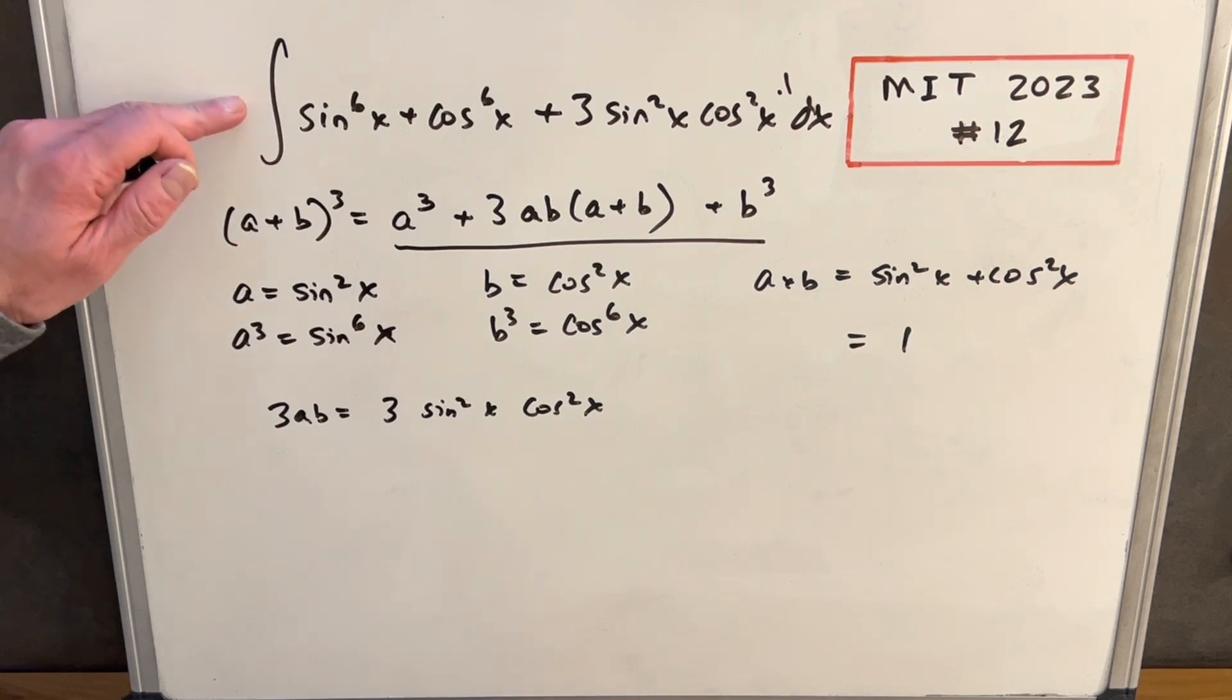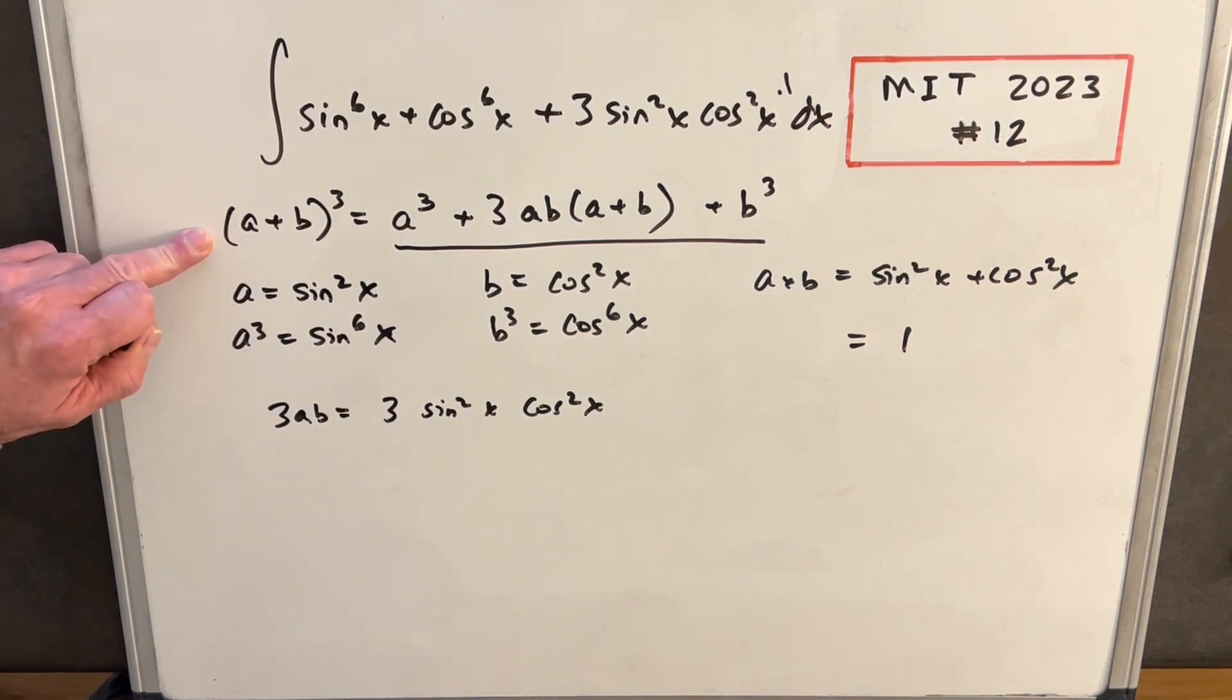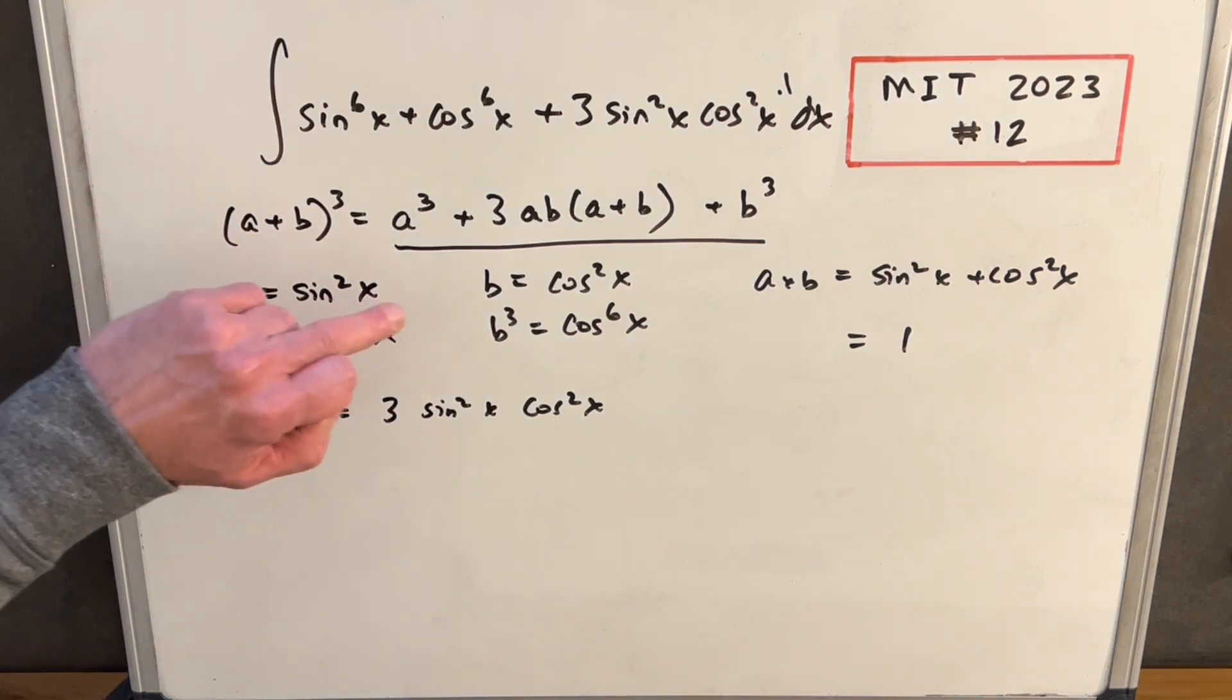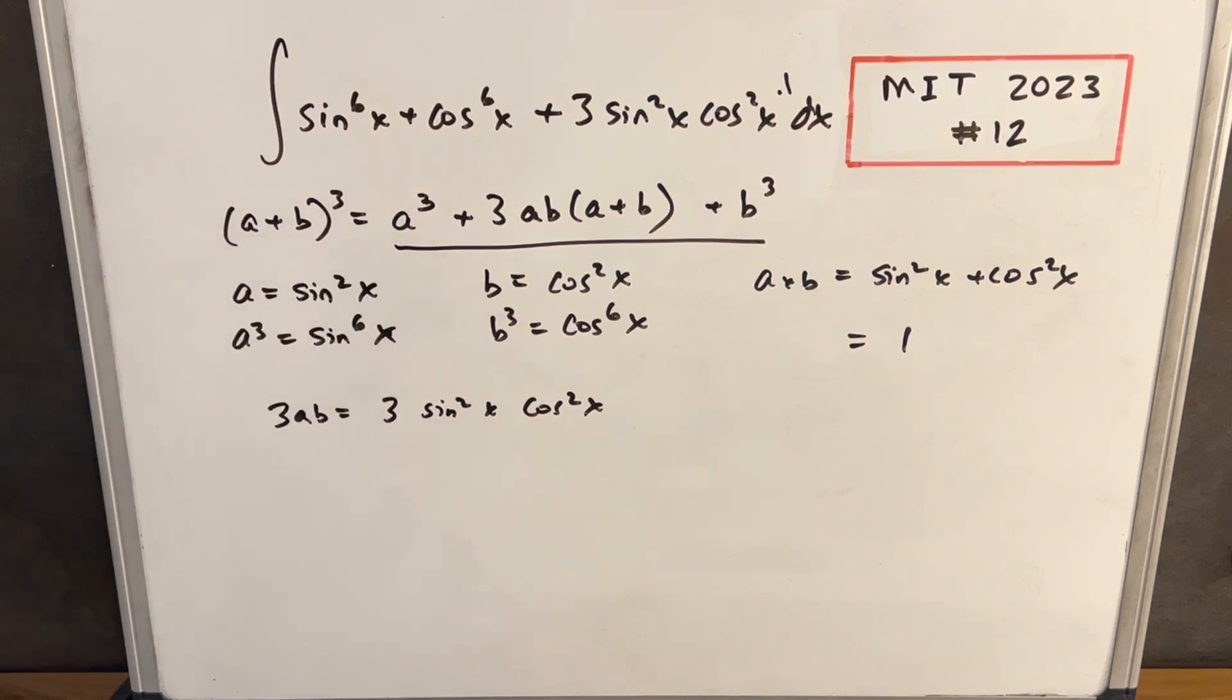And then we're matching this exactly with our a is sine squared and b is cosine squared. So in effect, we can replace our whole integral with this a plus b cubed, where a is sine squared x and b is cosine squared x. Let's see how that looks.